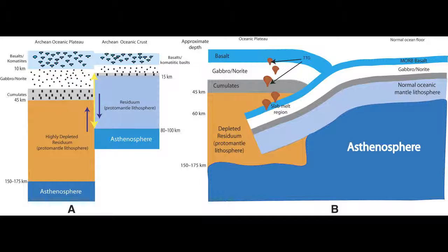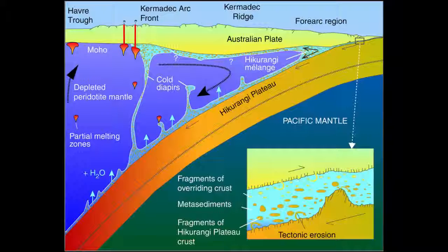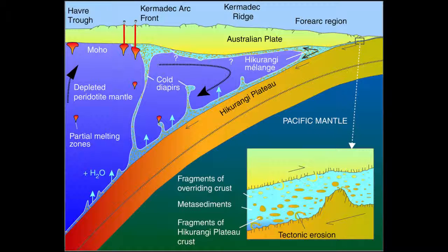There are over 180 oceanic plateaus covering an area of 18,486,600 square kilometers, or about 5% of the oceans. The South Pacific region around Australia and New Zealand contains the greatest number of oceanic plateaus.